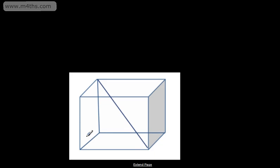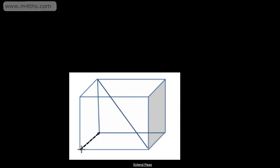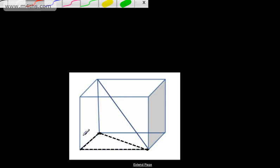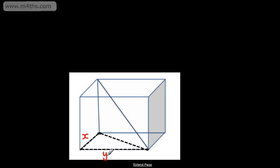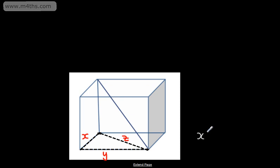Let's look at how that works with this cuboid. What I'm going to do is find the diagonal of a rectangle. So if I look at this diagonal across the box, I'll call this one X and this one Y - and what we could have here is Z. Using 2D Pythagoras, we can say that X squared plus Y squared is going to be equal to Z squared. That's just using what we've seen before.